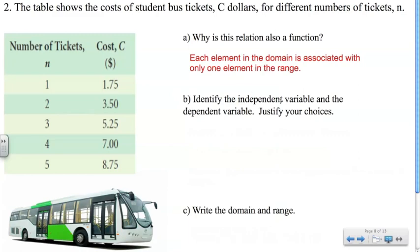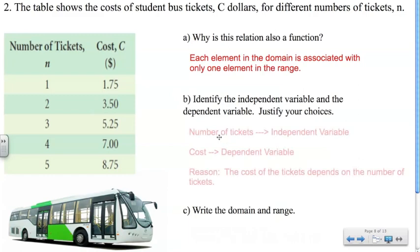Identify the independent variable and the dependent variable and justify your choices. If we think about it, the number of tickets isn't dependent on the cost — it's the other way around. The cost that you're going to pay is dependent on how many tickets you're going to get. So number of tickets is the independent variable, whereas cost is the dependent variable.